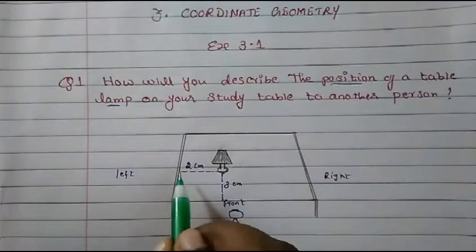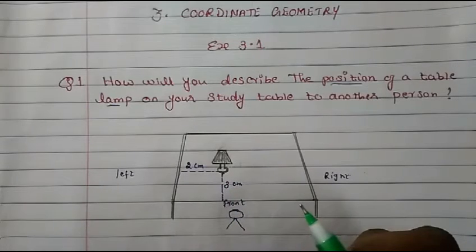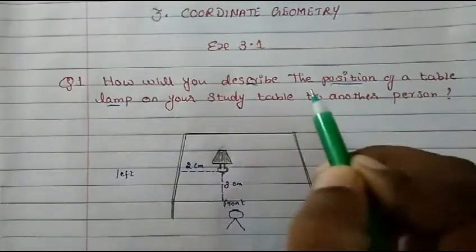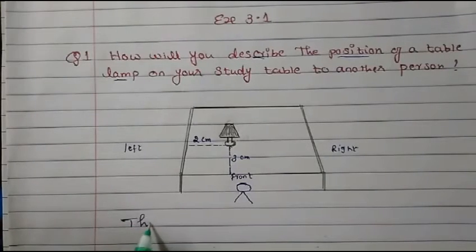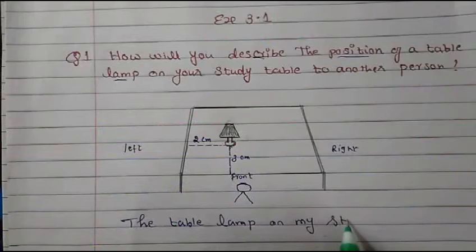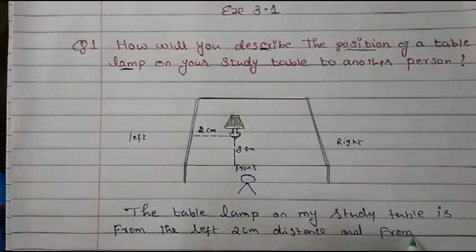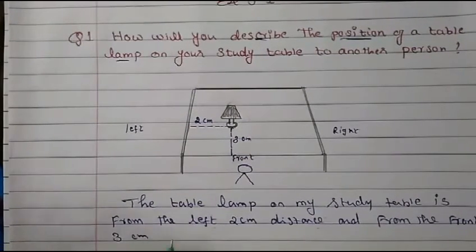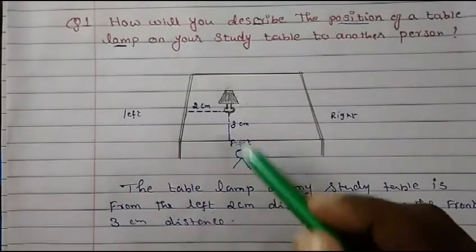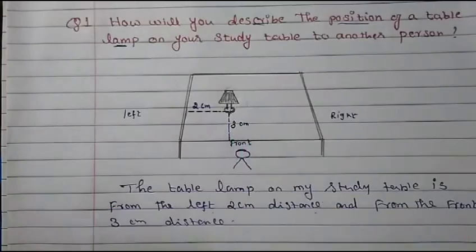So from here the distance is three centimeters and from the left it is two centimeters. So you will describe: the table lamp on my study table is two centimeters from the left and three centimeters from the front.